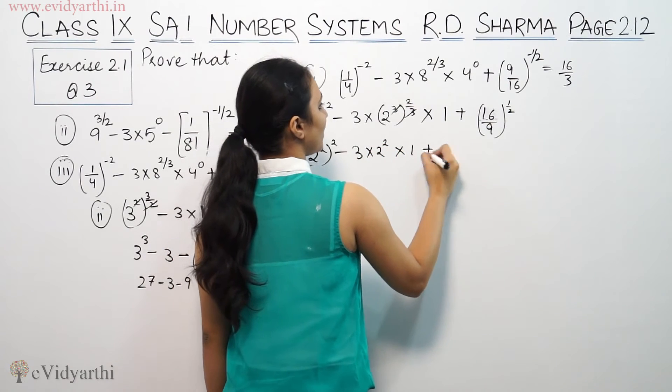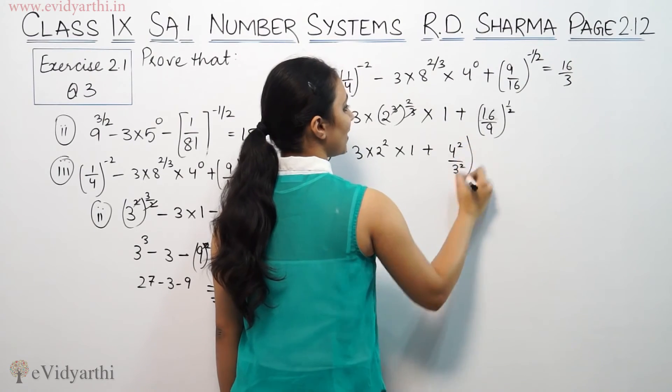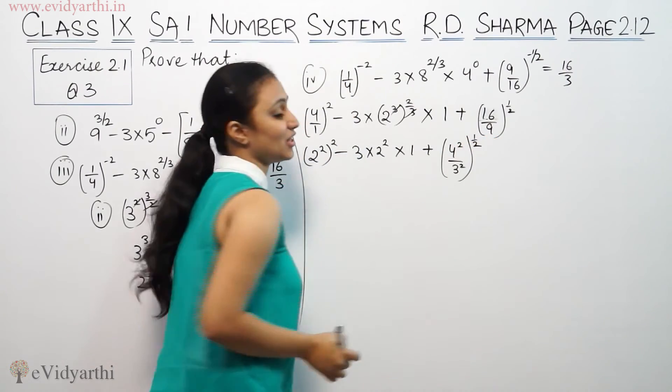This is 2 squared into 1. This is 4 squared is 3 squared raised to the power 1/2.